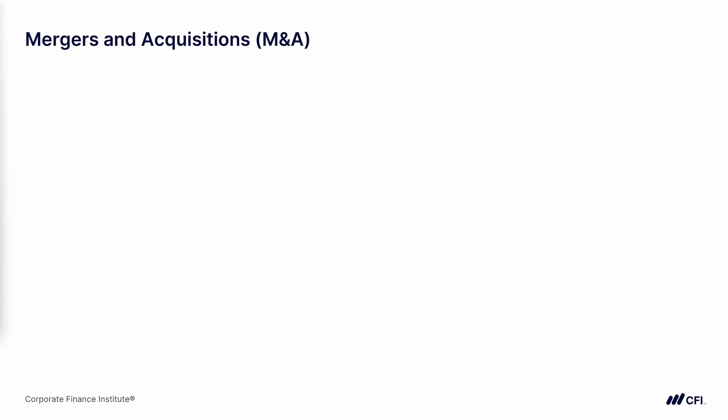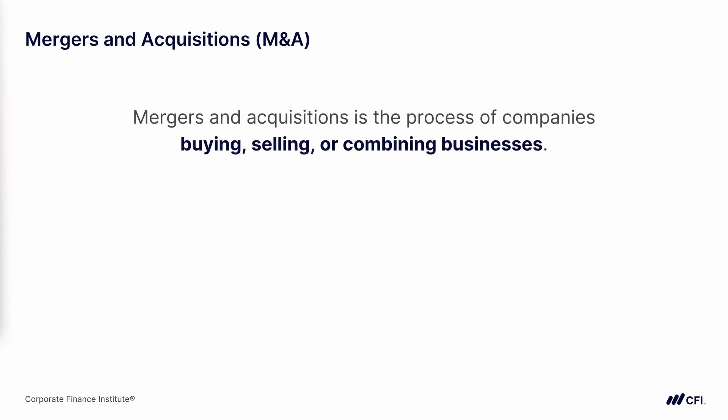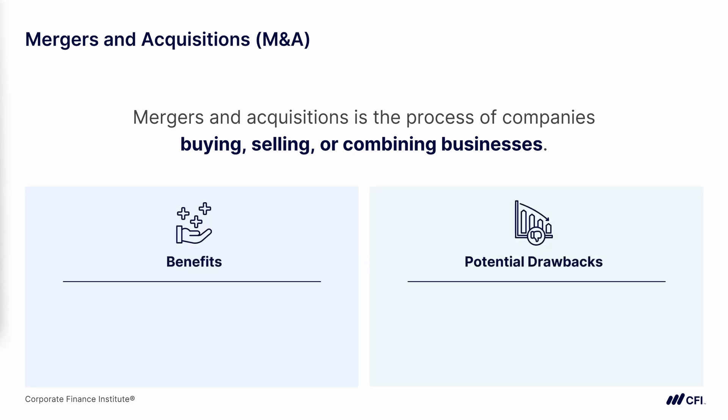This course is not really going to focus on mergers and acquisitions, or M&A, but it's important for us to have a basic understanding of what it is. Essentially, M&A is the process of companies either buying, selling, or combining businesses. One useful thing to remember is that companies often make a decision about whether they want to build their own expansion capacity, or buy it from another company who's already built it — which would be M&A. Let's look at some benefits and some potential drawbacks of doing mergers and acquisitions.